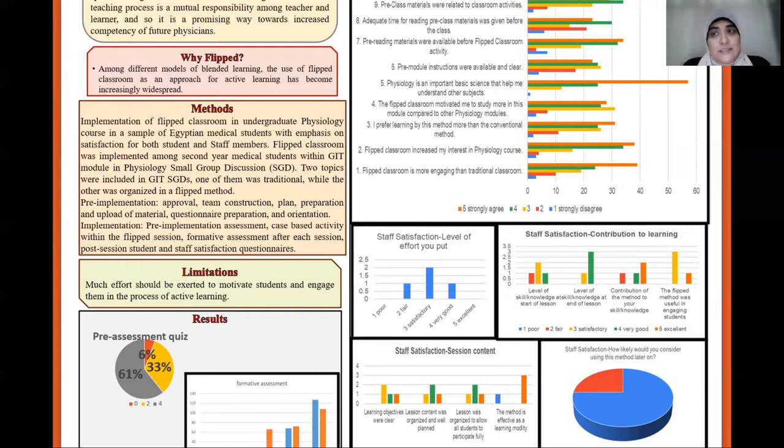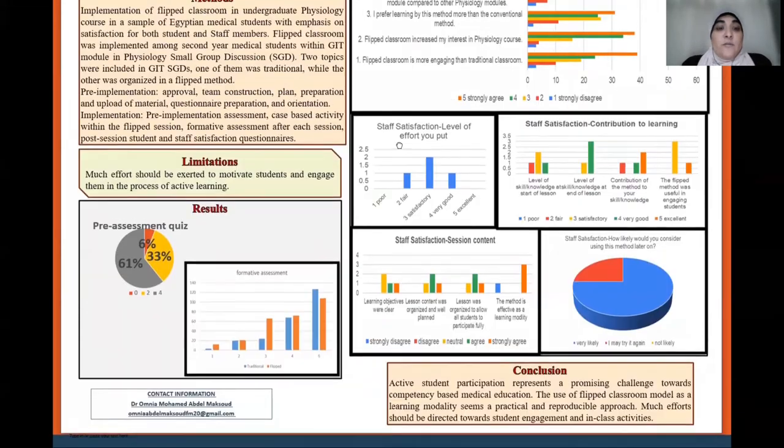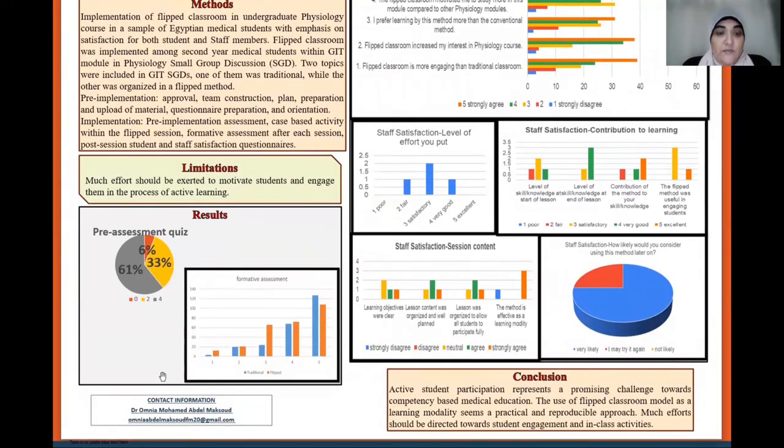The limitations that I see in the flipped classroom implementation was that much effort should be exerted to motivate students and engage them in the process of active learning. What about the results? First of all, we have the pre-assessment quiz. We see that most of the students had the full mark grade in the pre-assessment quiz which means that they were to a great extent oriented with the material and tried to understand the material by themselves or even read it.